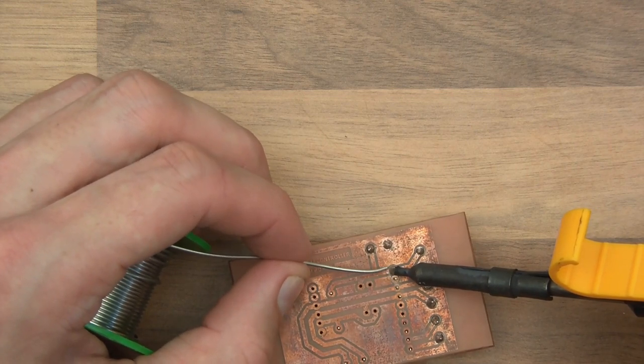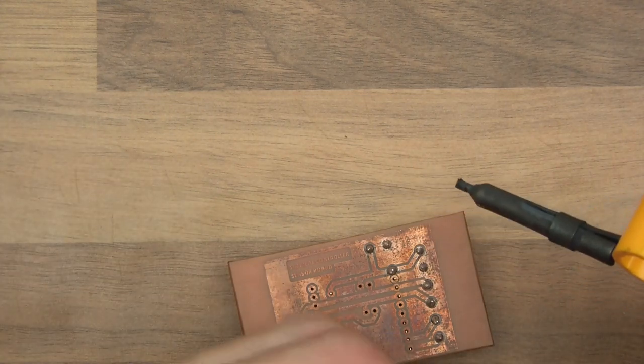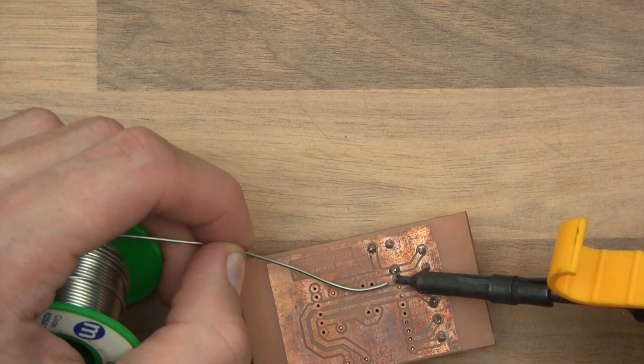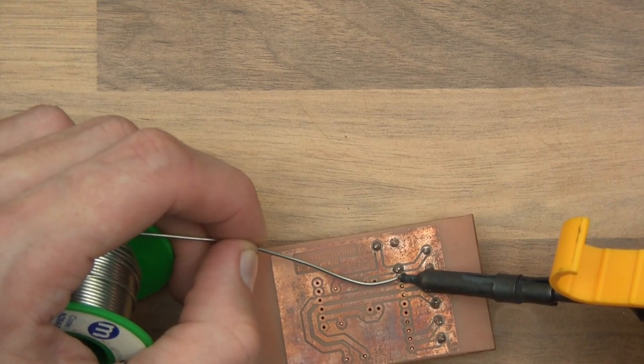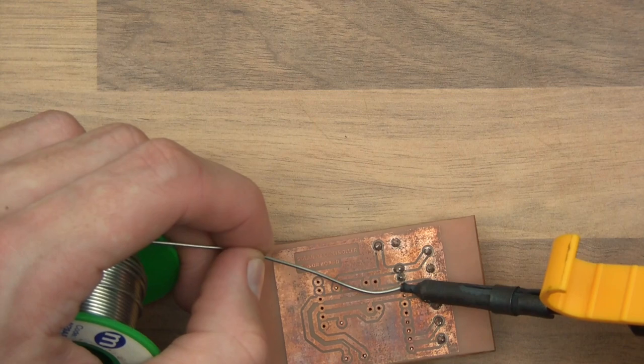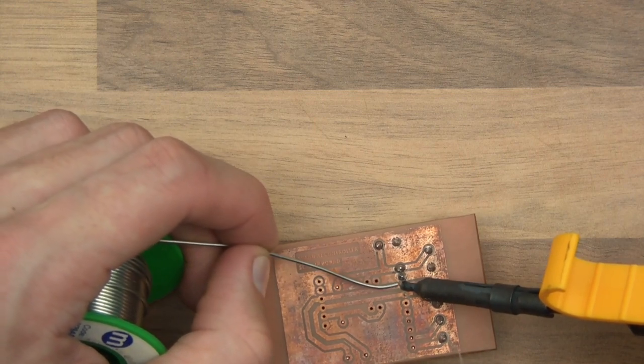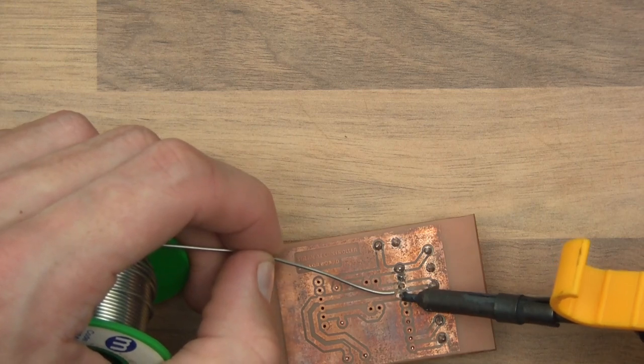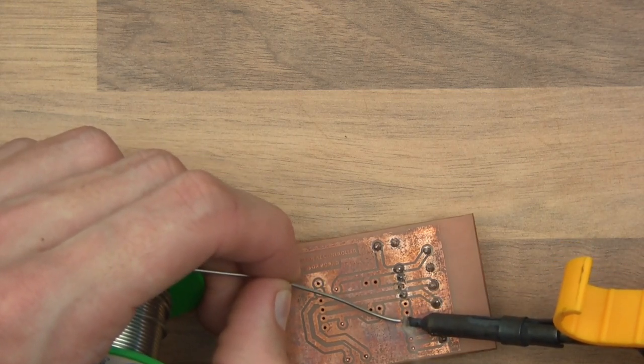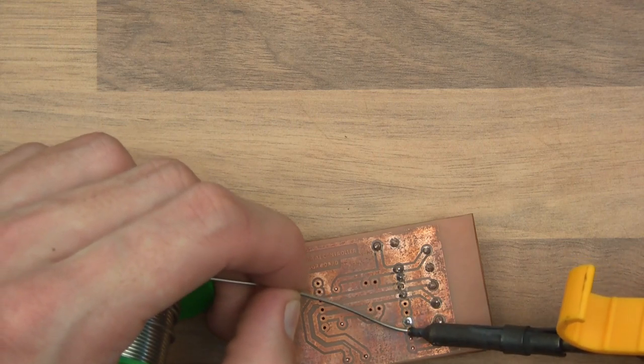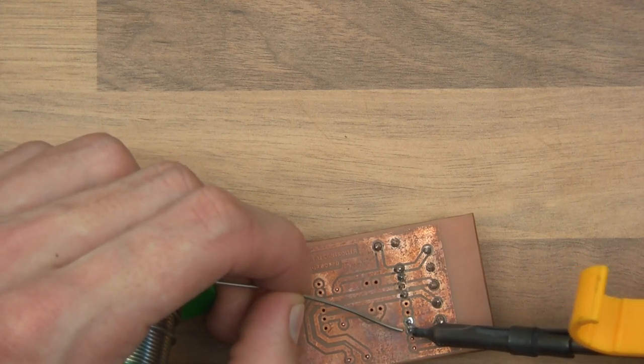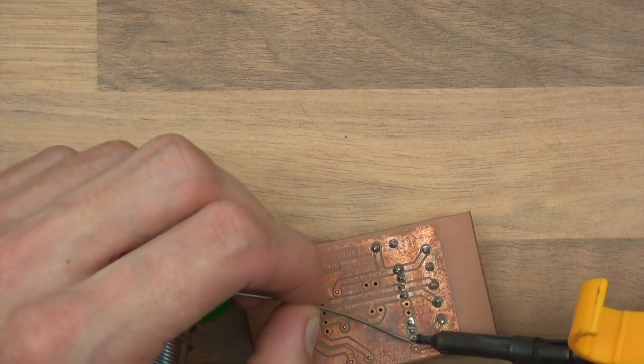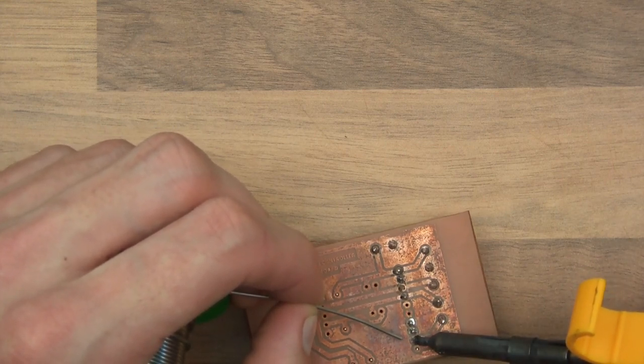From there using the I2C protocol I send the data to the ESP32. The ESP32 basically makes some decisions based on that data and then it sends data to my router, and from the router it goes to the server.